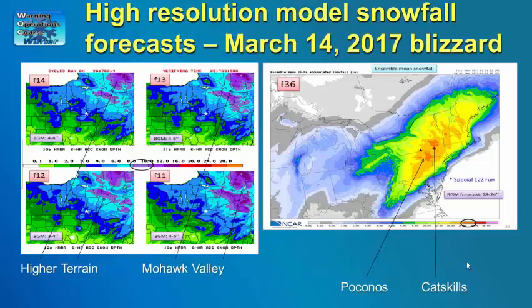High-resolution models and mean fields from high-resolution ensembles will account for topography in their QPFs. QPF from the 3-kilometer NAM model for a blizzard over central New York on March 14, 2017 shows higher snowfall totals over the higher terrain north and south of the Mohawk Valley, with a minimum of snowfall forecast in the Mohawk Valley. The 3-to-4-kilometer NCAR ensemble also indicates maxima over higher terrain in the Pocono Mountains in northeast Pennsylvania and the Catskill Mountains in eastern New York. However, as of 2017, informal surveys of forecasters indicate that high-resolution models may have a tendency to place too much precipitation over higher elevations and sometimes extend too much precipitation downstream from terrain barriers.